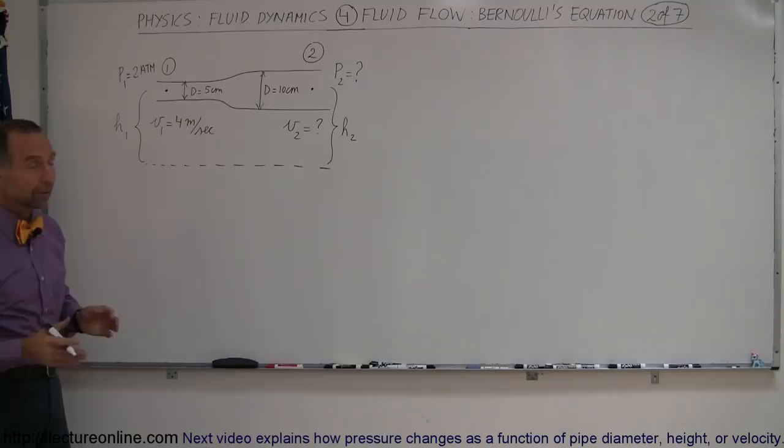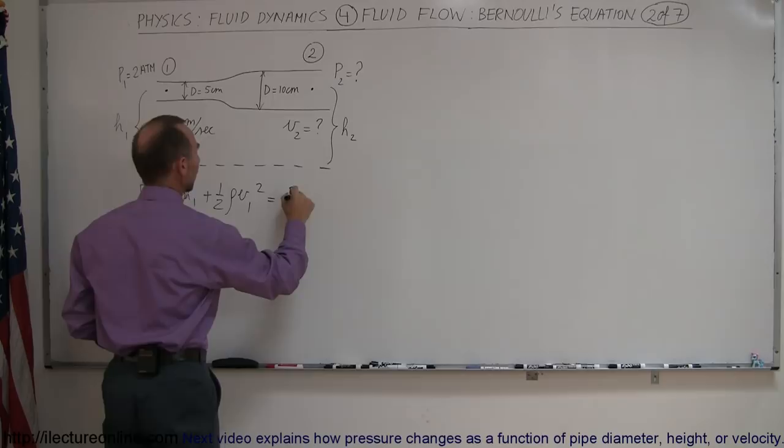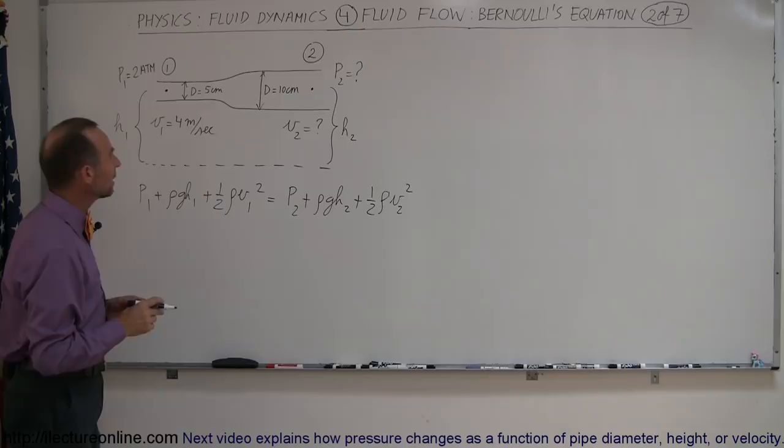Let's write down Bernoulli's equation. We have P1, that's pressure at 1, plus rho GH1 plus 1 half rho V1 squared, is equal to the pressure at point 2, plus rho GH2, plus 1 half rho V2 squared.